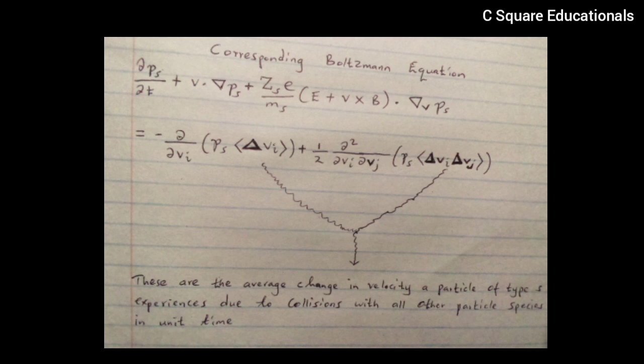The third term includes the particle acceleration due to the Lorentz force and the Fokker-Planck term at the right-hand side represents the effects of particle collisions. The quantities delta v_i and delta v_i delta v_j are the average change in velocity of particles of type S experiences due to collision with other particle species in unit time.